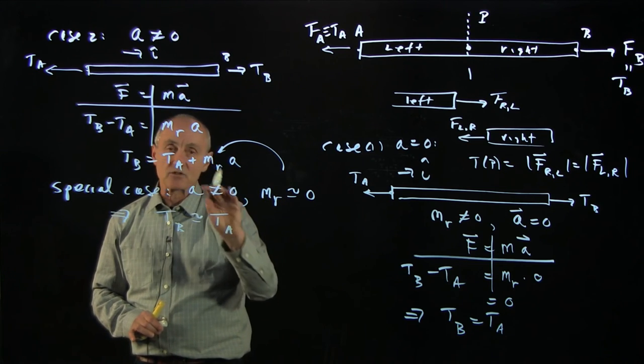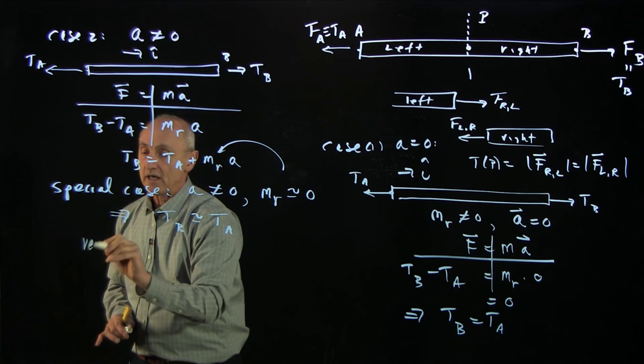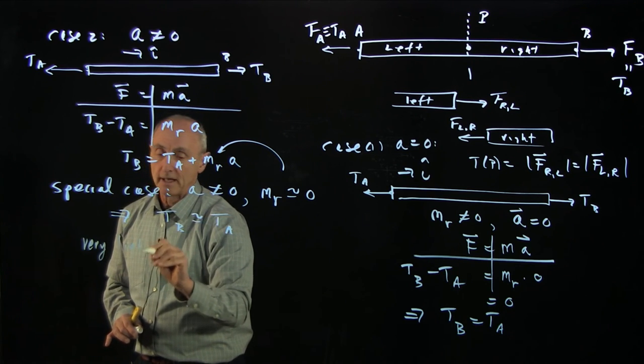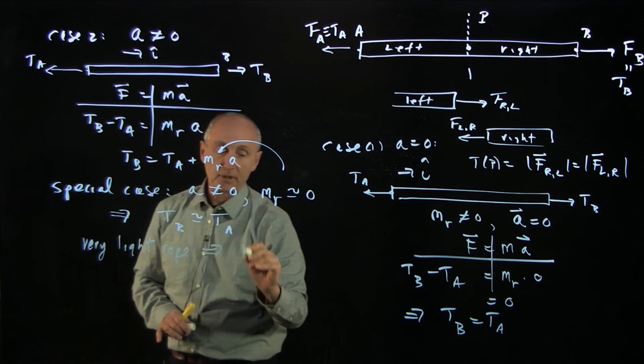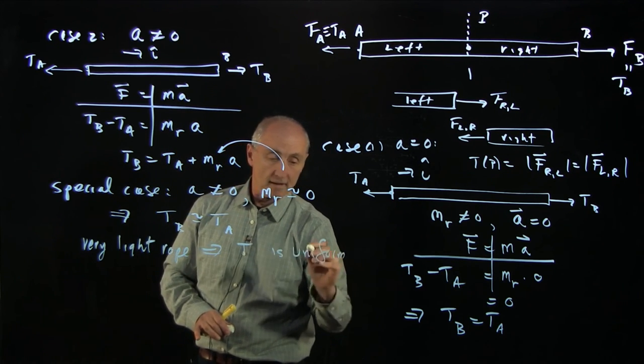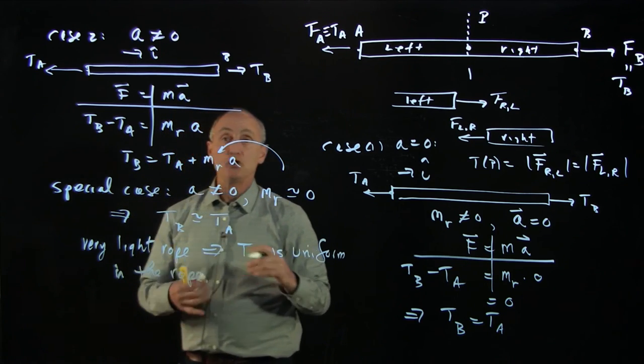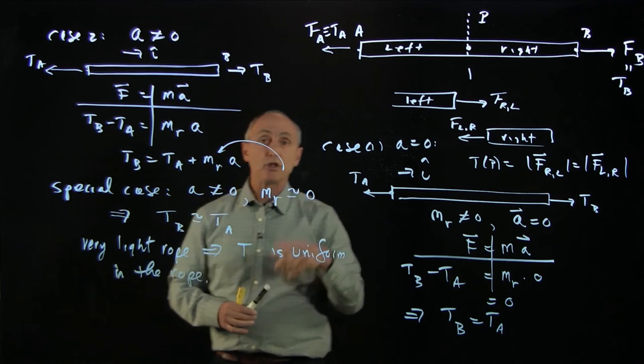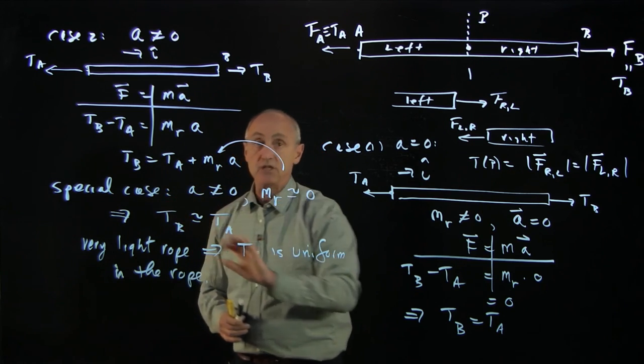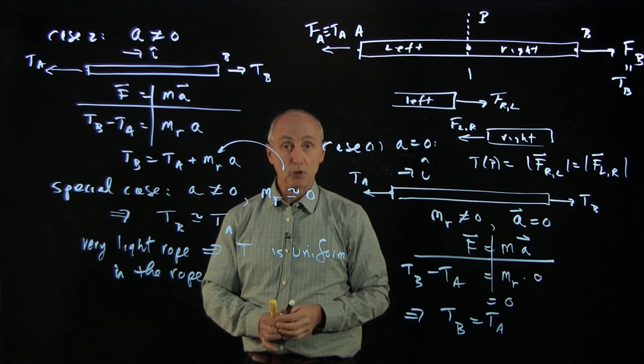Ropes are not massless. There's a small difference. But under those circumstances, when we say a very light rope, that even if it is accelerating, implies that T is uniform in the rope. And we can say the rope is under uniform tension. And we will often refer to this case when we analyze problems where we're pulling objects, for instance, in a typical pulley problem.